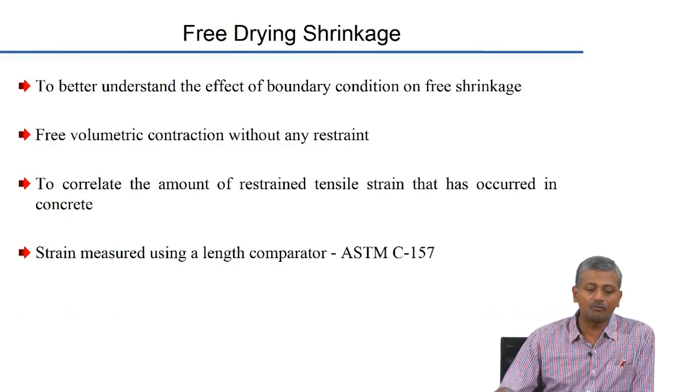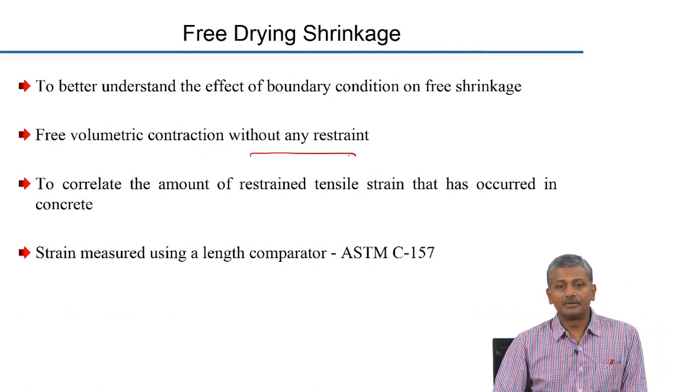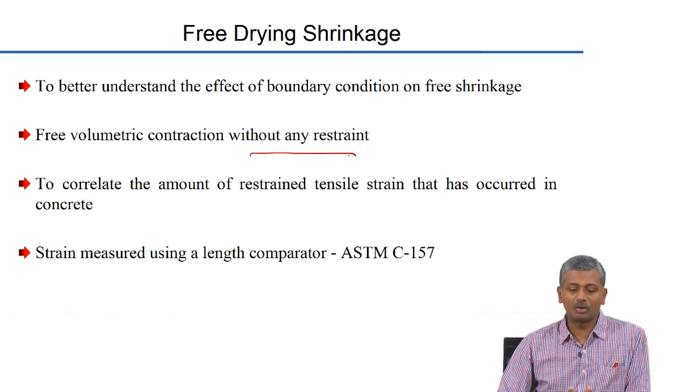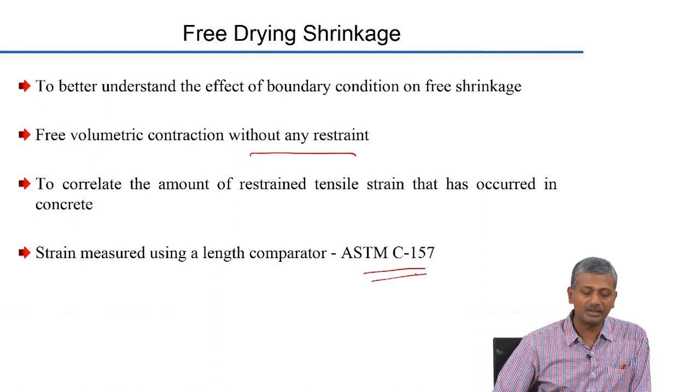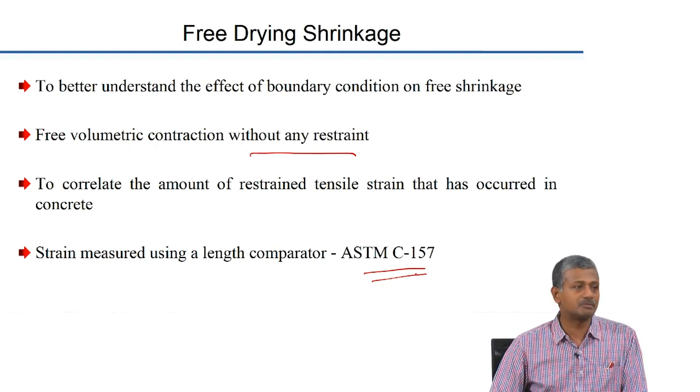Nevertheless, most shrinkage studies in concrete mix design as well as research studies are done using free shrinkage measurements, where you simply prepare prismatic specimens of the concrete, subject them to a drying environment, and measure the length periodically. This is essentially free volumetric contraction without any restraint — that is what we mean by free drying shrinkage. This is useful to correlate the amount of restrained tensile strain actually occurring in the concrete, and is typically done using the methodology prescribed in ASTM C157.